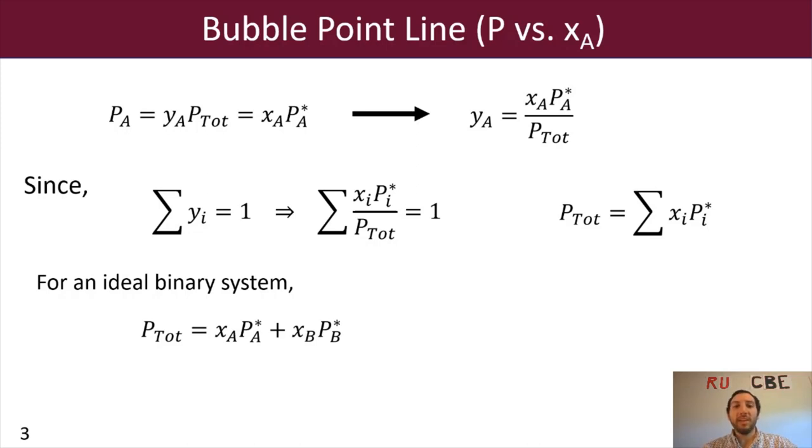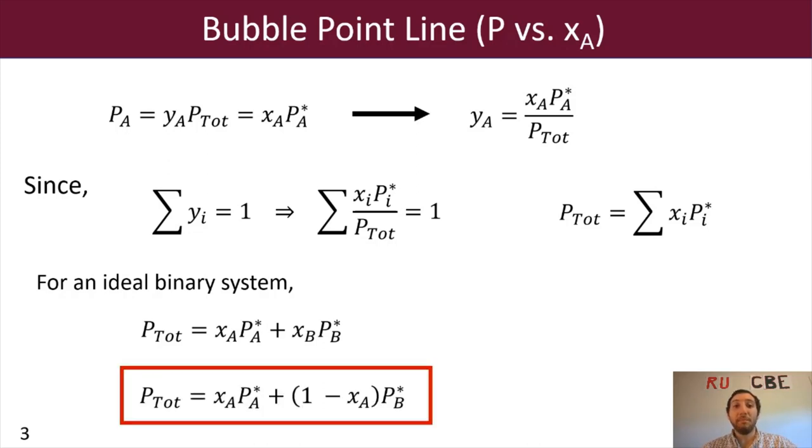And we can now rearrange this again and define XB in terms of XA. And so we would get P total equals XA PA star plus 1 minus XA times PB star.